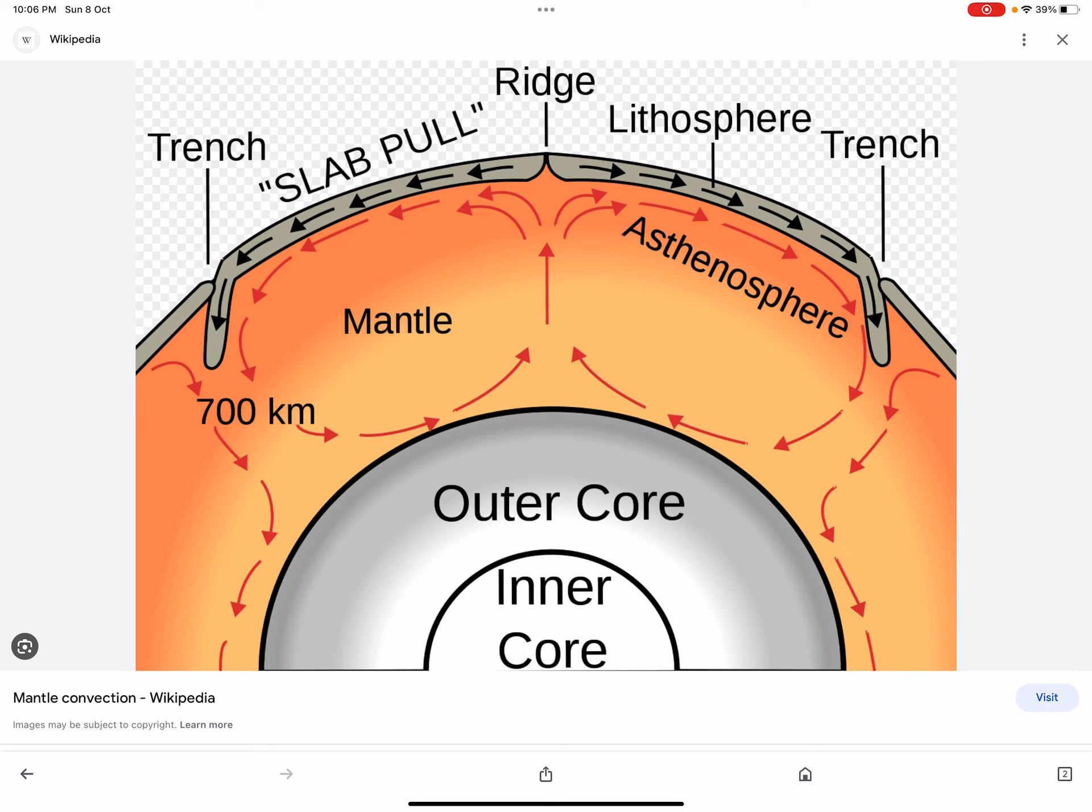These are black arrows, slab. On the right side, this lithosphere, this plate is going to move. Then where there is trench, it is going to sink and again it will mix in asthenosphere. And this is the reason for plate movement.